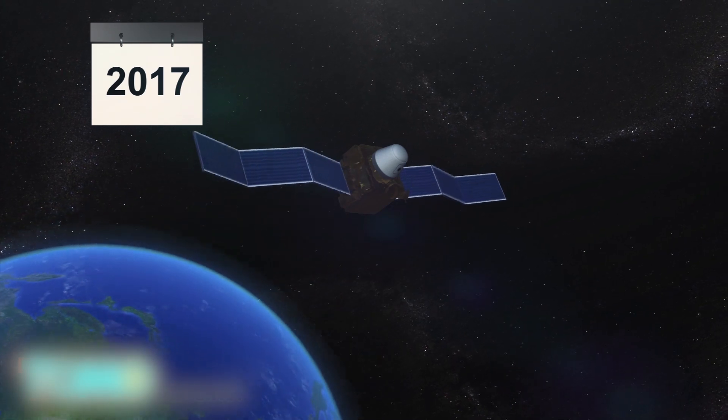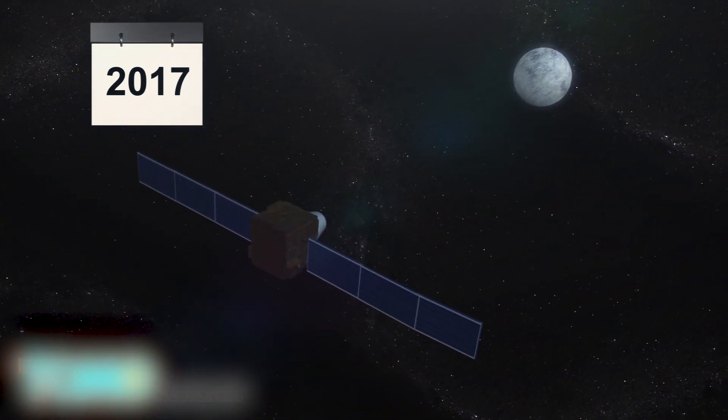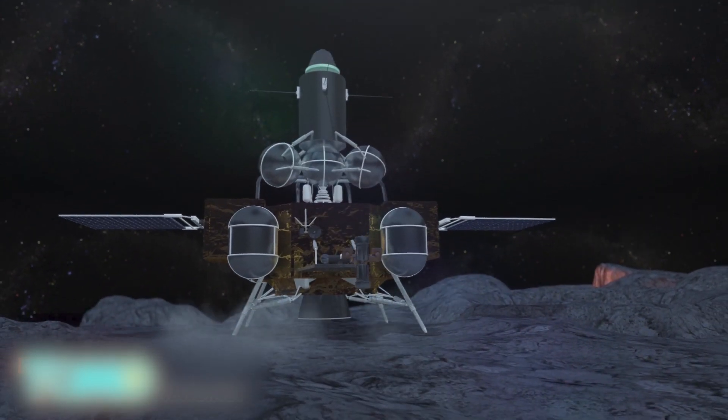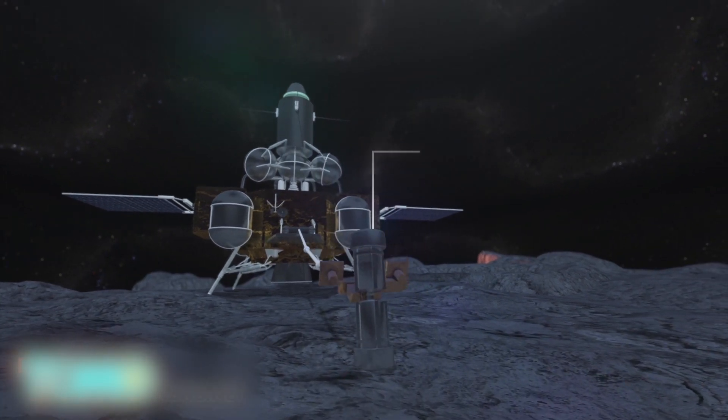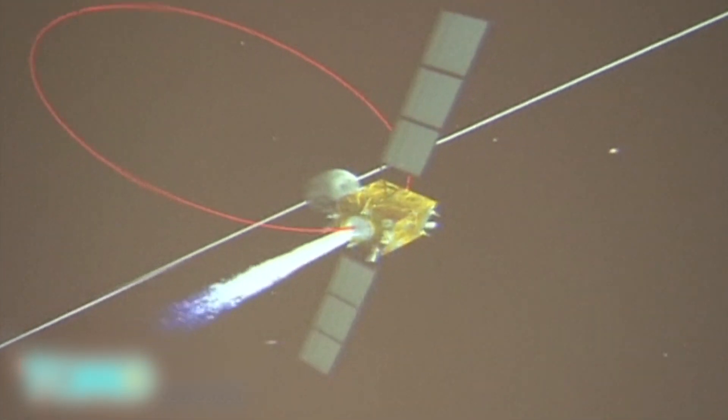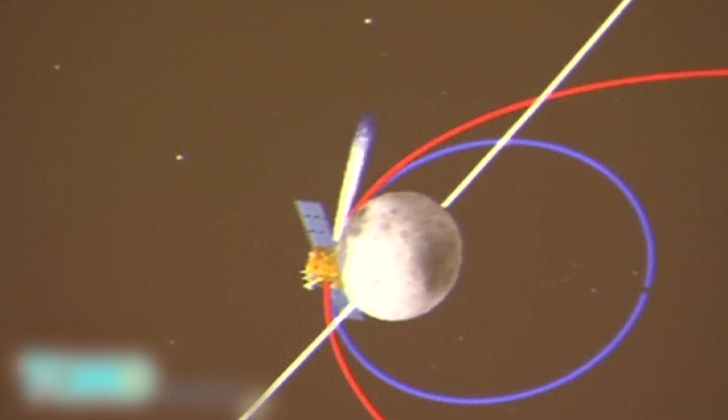The module is collecting data for China's Chang'e 5 lunar mission, which will be launched in 2017. Chang'e 5 is expected to make a soft landing on the moon and collect at least 2 kilos of rock and soil samples. China is reportedly looking to find helium-3 on the moon. Helium-3 could be used to power clean fusion plants.